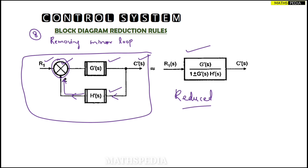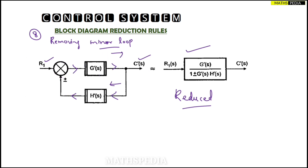The block reduction rule says that whenever you see a minor loop, to identify it, see that the direction is opposite — this block is going right side, this block is coming left side. So the direction of the signal through G'(s) and H'(s) is opposite. This kind of combination is called a minor feedback loop, because it has one block in the forward path and one block in the feedback path — one small minor loop.